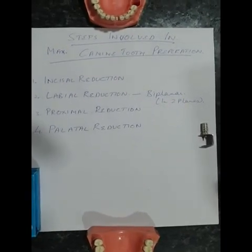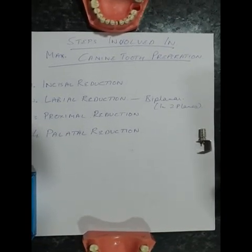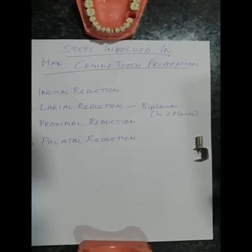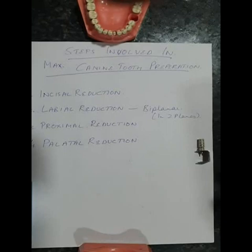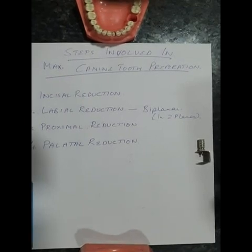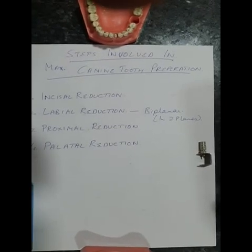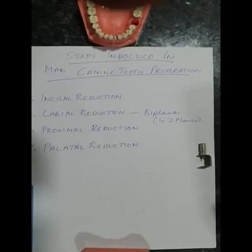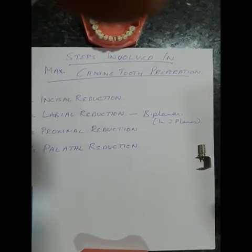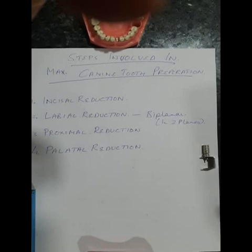In this biplanar reduction, we divide the labial surface into two halves: one is the incisal two-third and another is the cervical one-third. First, we draw imaginary lines on the labial surface, divide it into three equal parts, then place our bur at the tip of the lower border of the middle third — the area above that becomes the incisal two-third. We then give depth orientation grooves in the incisal two-third area at a slight angulation of around 20 degrees to the long axis of the tooth.